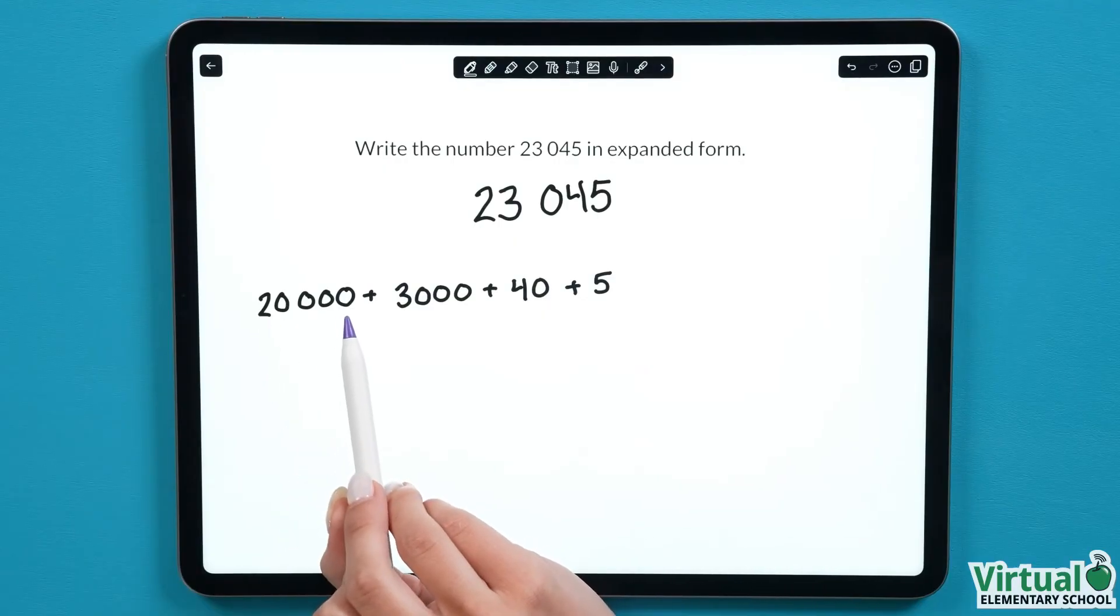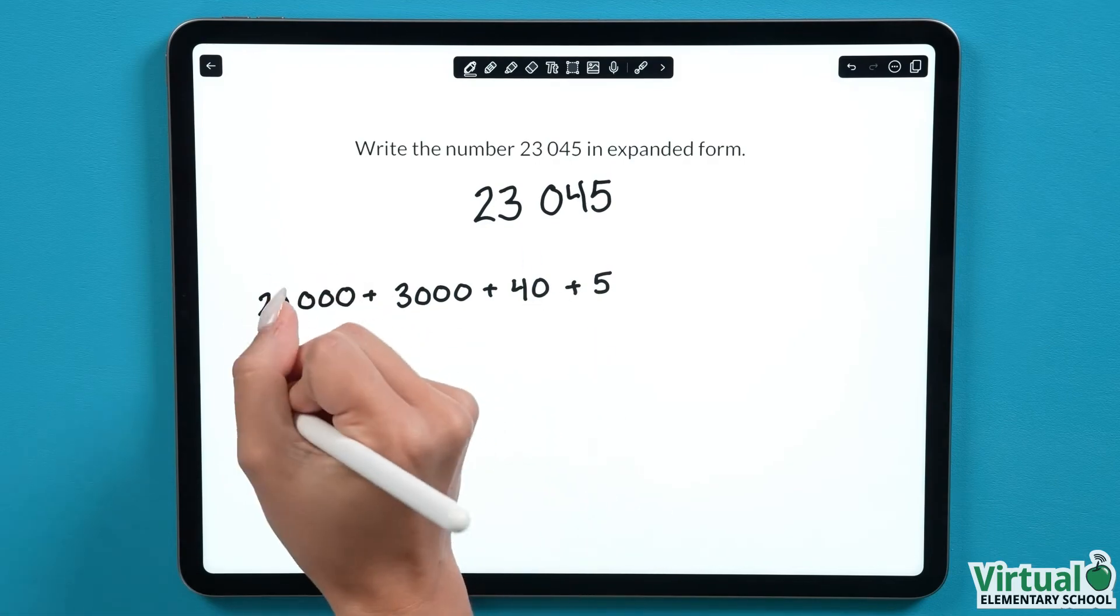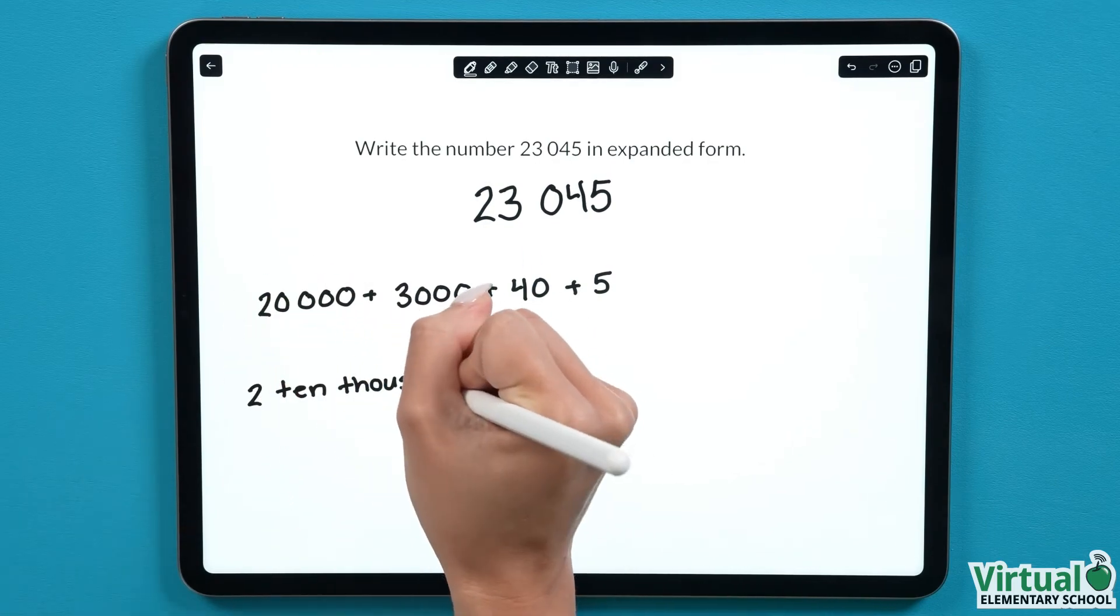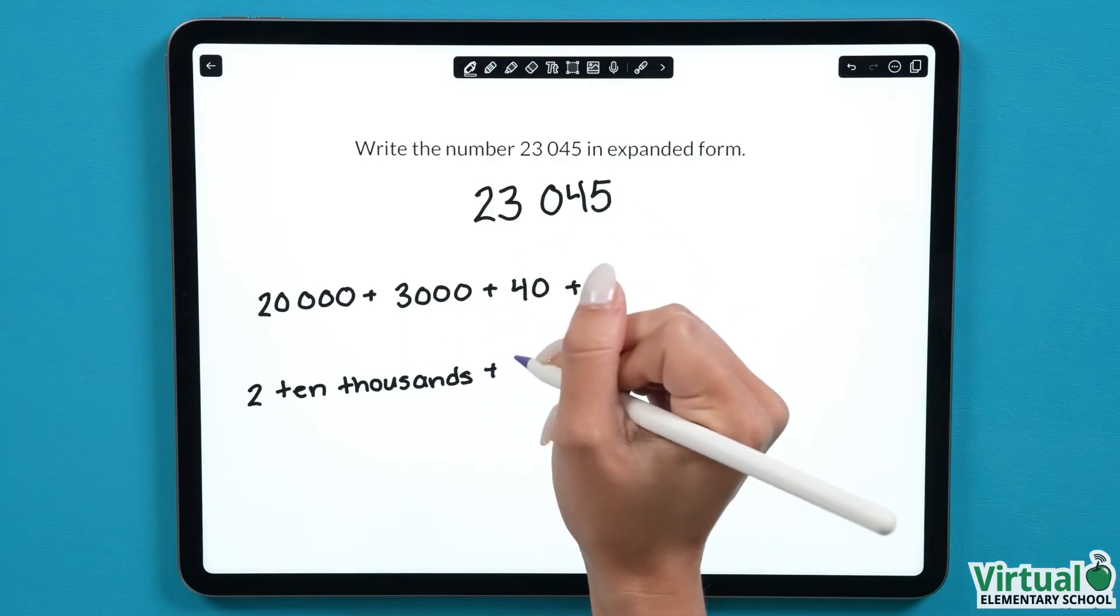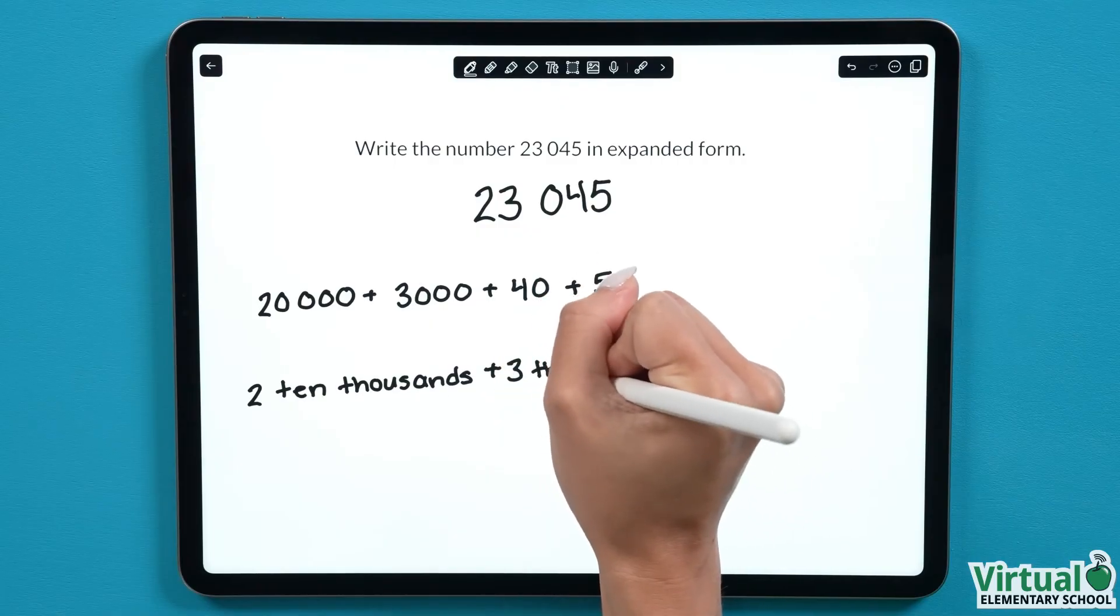The 2 ten thousands is the same as 20,000. We will write 2 ten thousands. Now, moving on to our next number, we see it's 3,000. We add our plus sign and say 3 thousands.